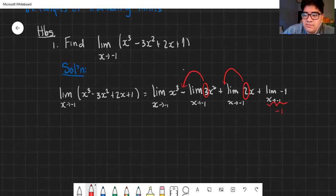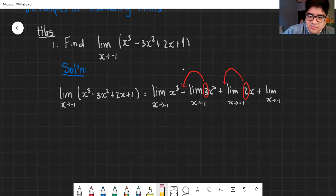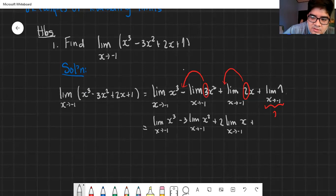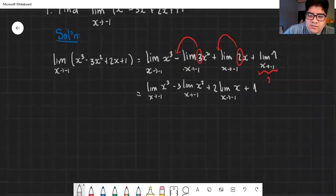This should be positive 1 since the given is positive 1. So this is the limit as x approaches negative 1 of x cubed minus 3 times the limit as x approaches negative 1 of x squared plus 2 times the limit as x approaches negative 1 of x plus 1. What you do is evaluate it.